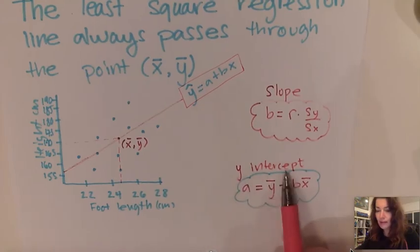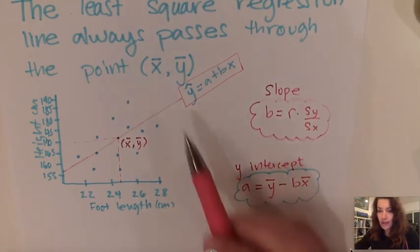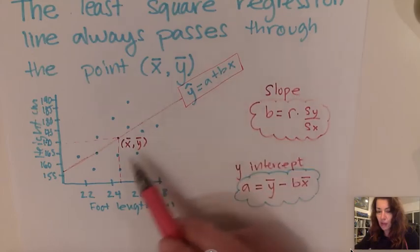And to calculate the y-intercept, we already mentioned that the best fit line here always contains the mean of x and the mean of y.